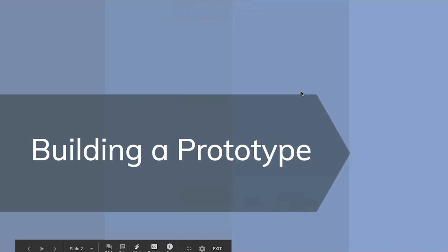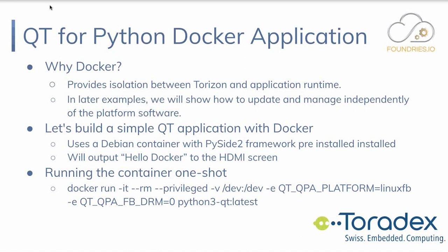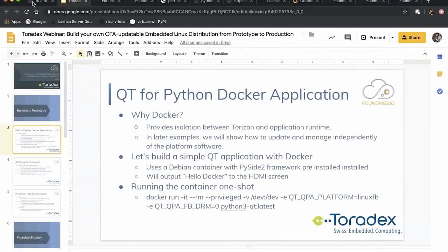Let's talk about building prototypes — starting with the application. We want to build a Qt application using Python and Docker. Docker provides good isolation between the base platform (Torizon) and the application runtime, reproducibility so you can move it across platforms easily, and it's fairly easy to update. What we're building today is simple: a Debian container using the PySide2 framework that outputs 'Hello Docker' to the HDMI screen on the Apalis, run in a one-shot configuration from the command line.